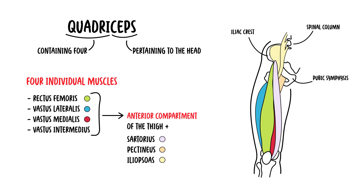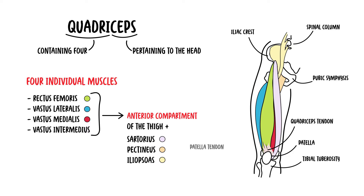The quadriceps muscles have different origins, but converge and insert onto the patella as the common quadriceps tendon. This tendon then envelopes the patella and inserts onto the tibial tuberosity. The portion of the tendon that extends inferior to the patella is generally referred to as the patellar tendon.